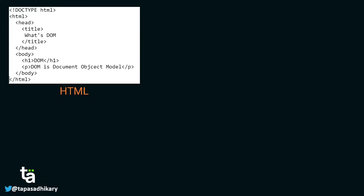This different representation is required because the HTML you see rendered on the web page is pretty much static. For example, a p tag that says 'DOM is Document Object Model' — unless you have the ability to change that text, the web page will always look the same. So you need an ability to change things in the HTML structure to make your page dynamic. HTML doesn't have a direct ability to do that, which is why JavaScript comes into the picture, with an API called the Document Object Model API.